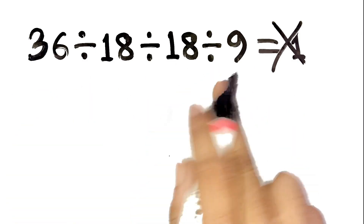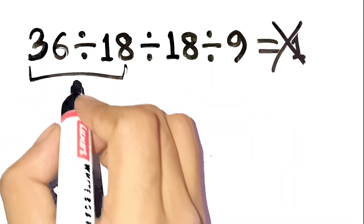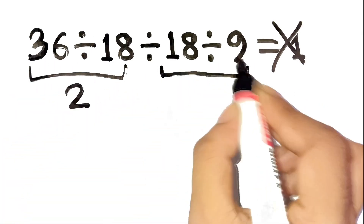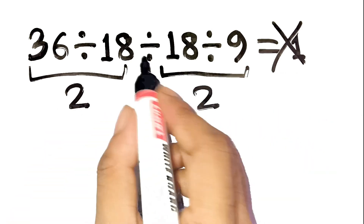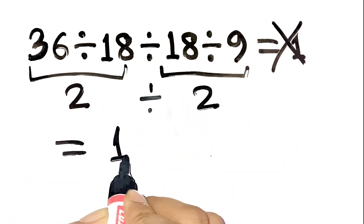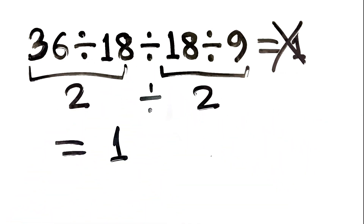I know what you're thinking. 36 divided by 18 is 2, then 18 divided by 9 is 2, and finally 2 divided by 2 is 1. Looks neat and simple, right?